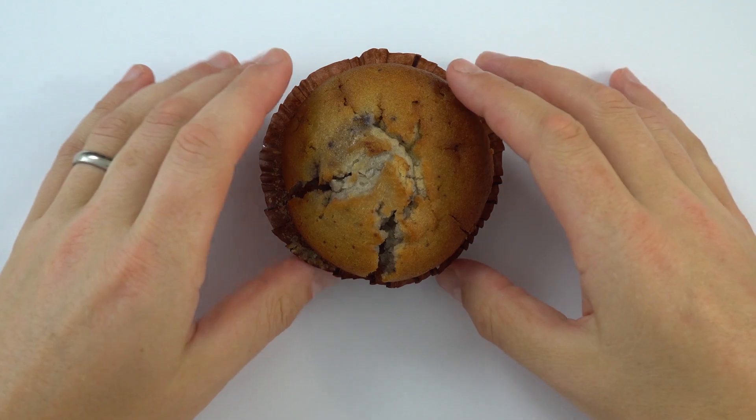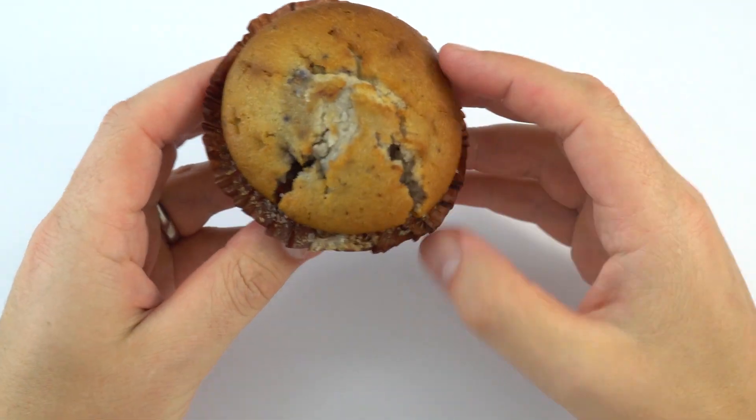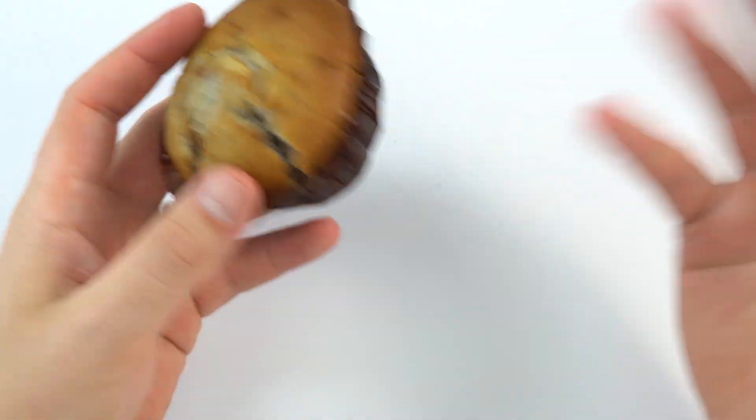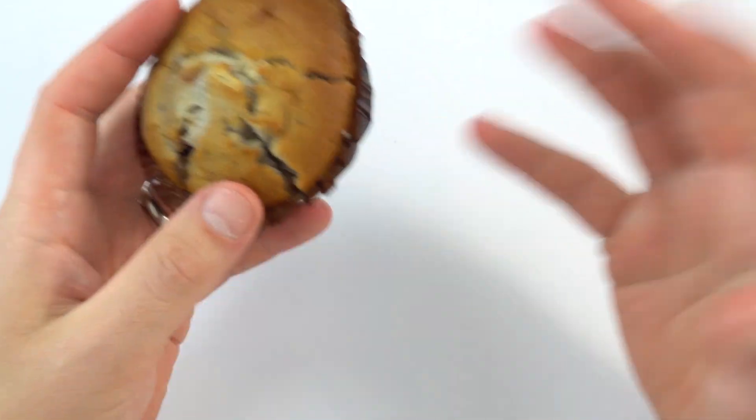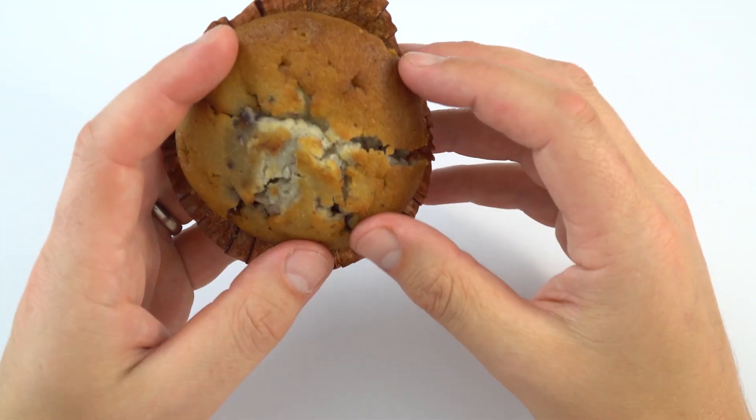In physics we represent the world around us with models. This model is called the plum pudding model. Now this was a kind of Victorian dessert they had. We don't really have plum puddings anymore but I do have a muffin.